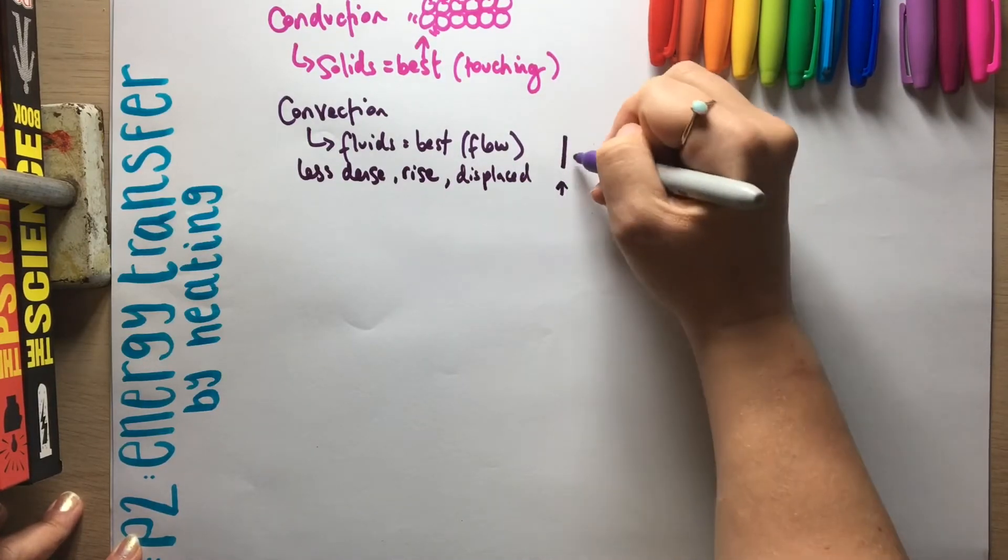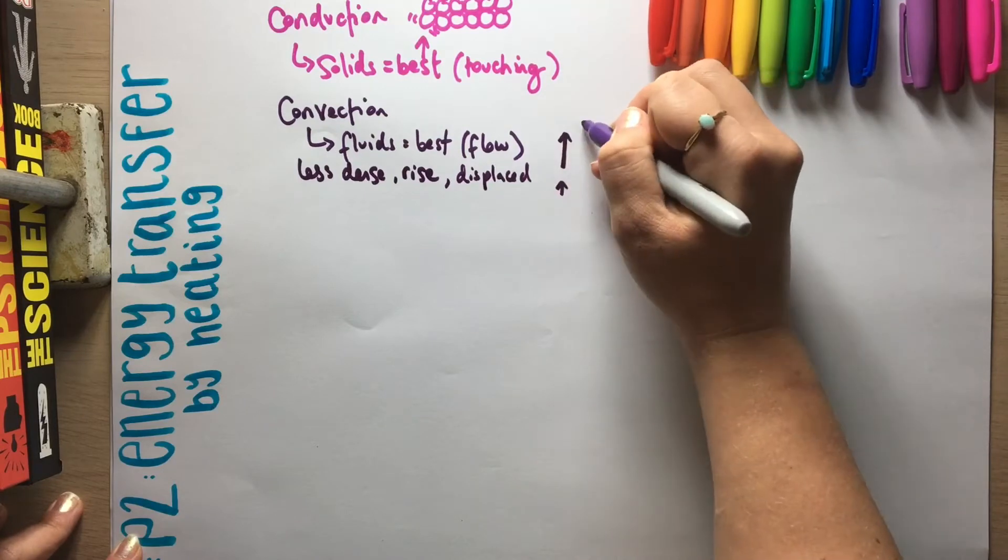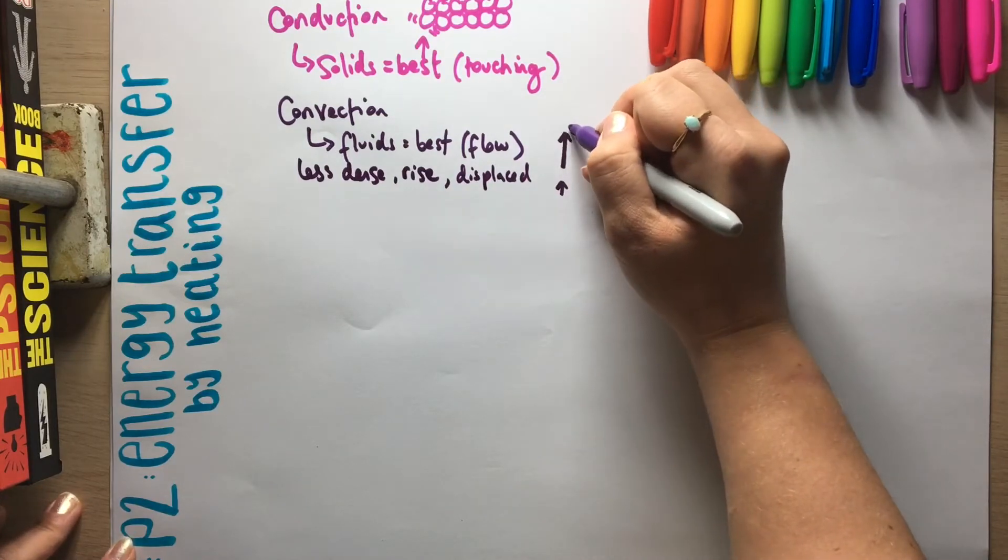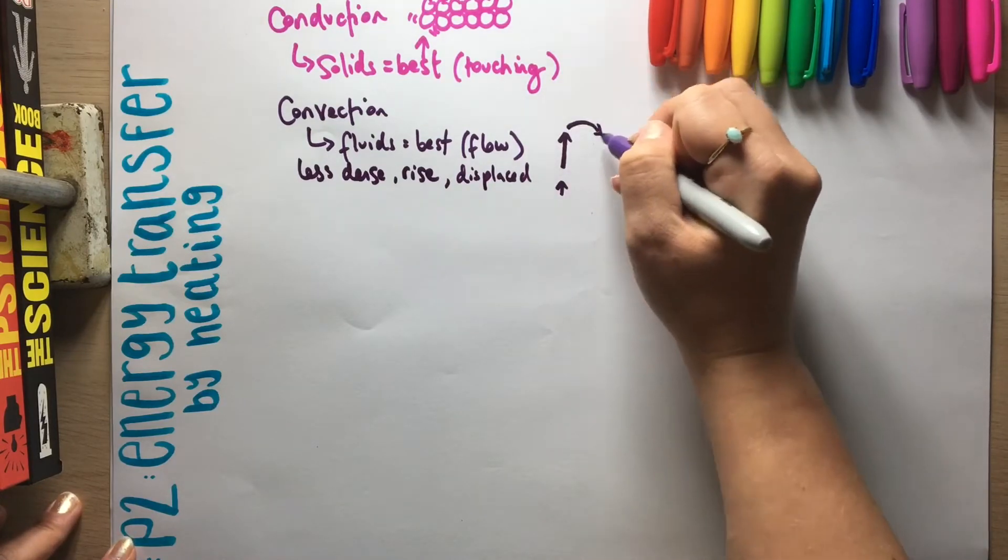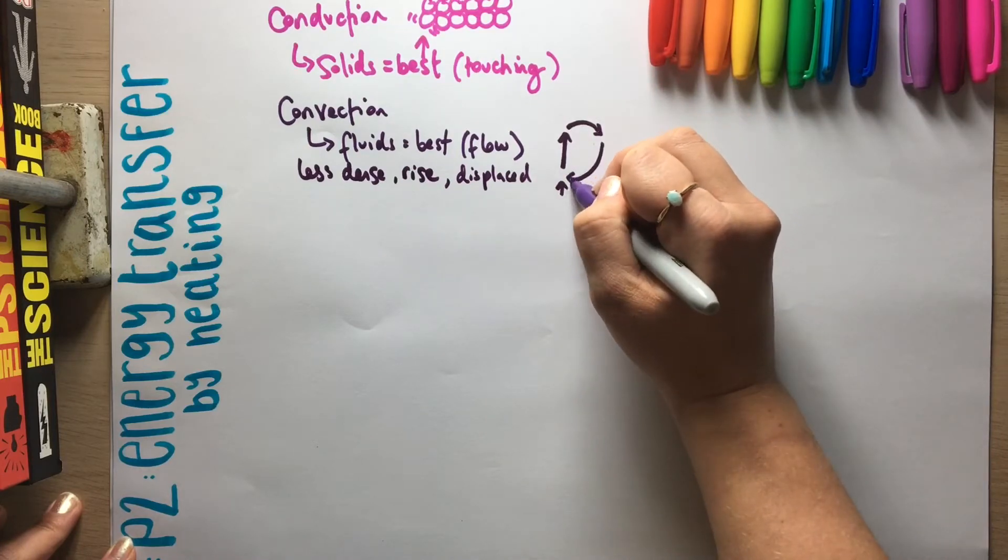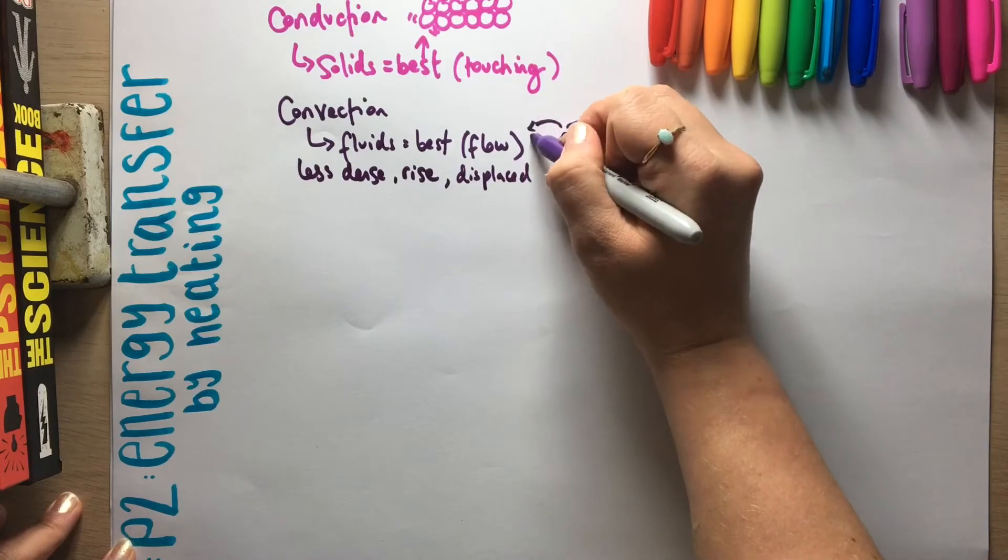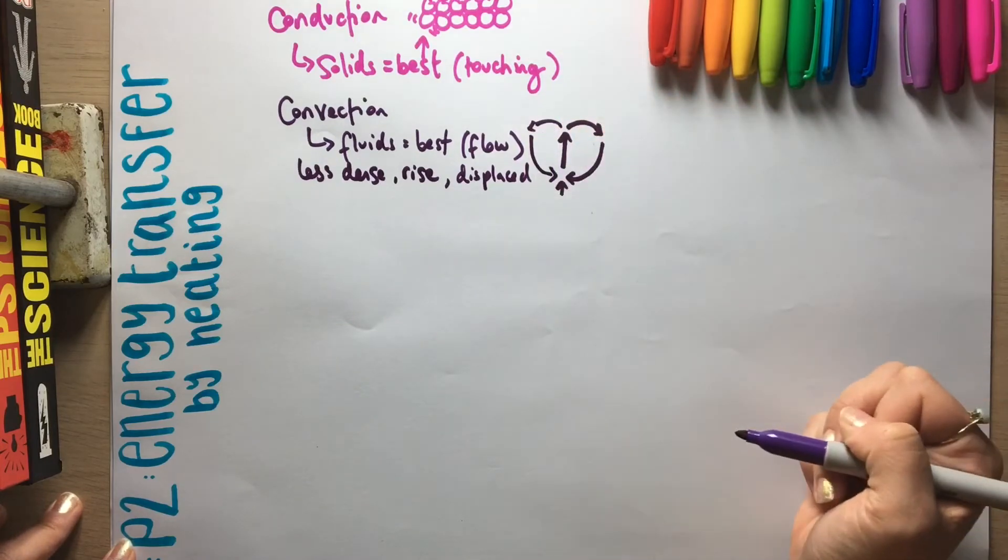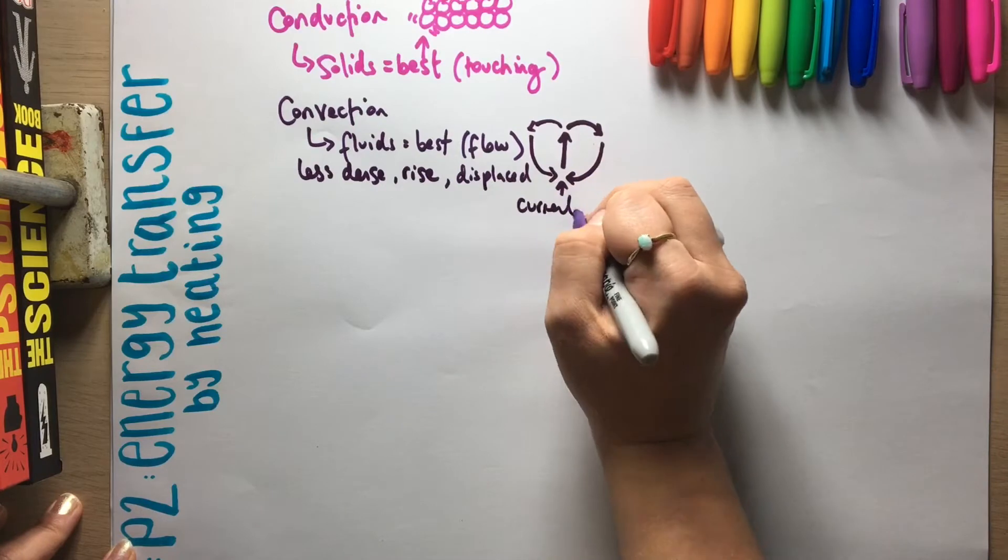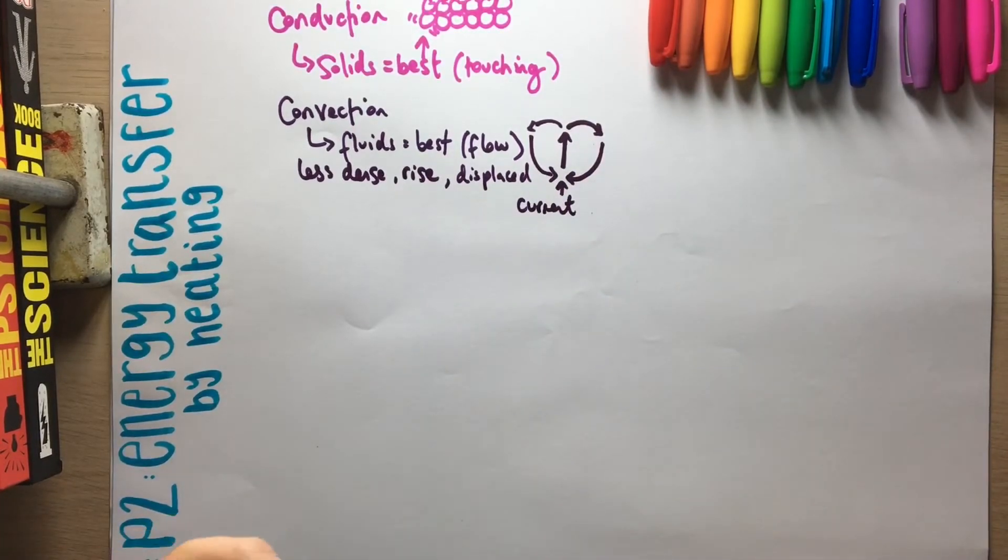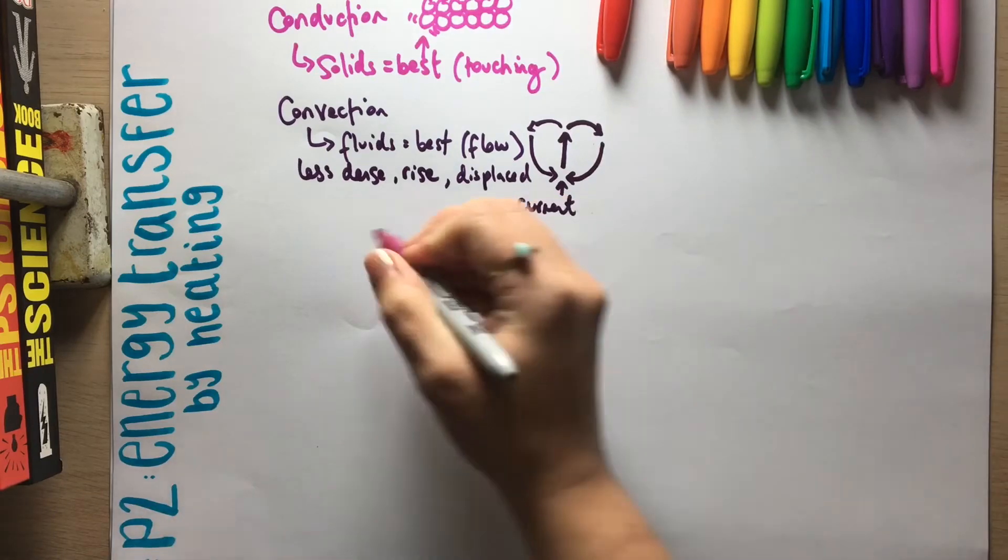So if the heat source is here, they rise up. Once they're away from the heat source, they'll start to cool down, but they have to get moved out of the way because there's this constant current that gets started up. So it would happen in both directions. I've just drawn one side. So we have this current that gets set up. And then we also have radiation.